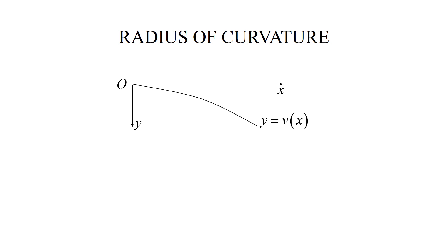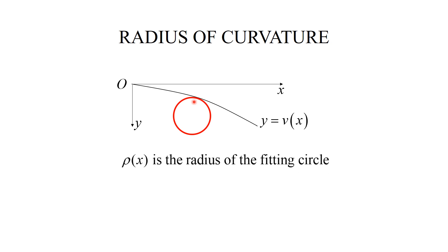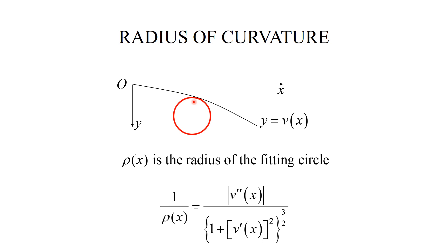It is also important to introduce the radius of curvature. Looking at the deflection line, instead of fitting a straight line — which is a tangent — I would like to fit a circle. The circle approximates the curve better than the straight line because it has curvature. The radius of this circle is denoted by rho, and using differential geometry, one can show that rho is given by a specific expression. It is a bit complicated and somewhat tedious to derive, but that is what it is.